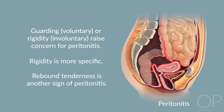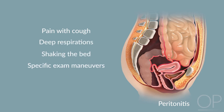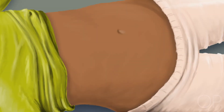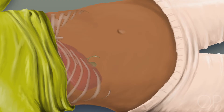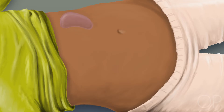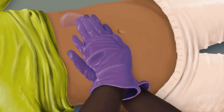In addition, rebound tenderness — upon which pain is worse when the examiner removes their hand rather than during palpation itself — is another sign of peritonitis, though this can be challenging to elicit in younger children. Pain with cough, deep respirations, shaking the bed, or specific exam maneuvers may be suggestive of peritonitis. The location of abdominal tenderness on exam is crucial. Biliary disease frequently manifests as right upper quadrant tenderness, and a positive Murphy's sign — elicited by palpating the right costal margin and observing a halt in inspiration due to tenderness — is a sensitive maneuver for acute cholecystitis. Several techniques are appropriate for detecting splenomegaly; beginning in the right lower quadrant, gradually advance hand placement towards the left upper quadrant and utilize the movement of the patient's diaphragm to nudge the spleen towards the examiner's fingers.